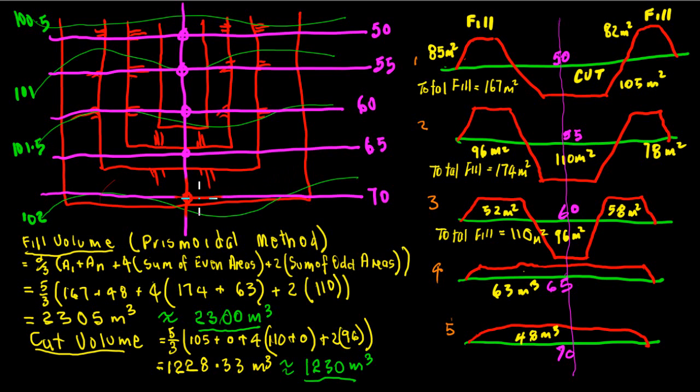Now it needs to have an even number of distances or gaps between the sections and an odd number of sections. You must have an odd number of sections to use the prismoidal method accurately or to actually use the prismoidal method.